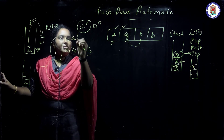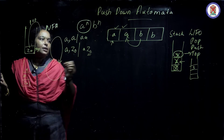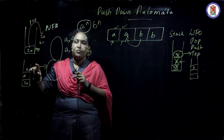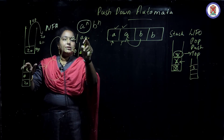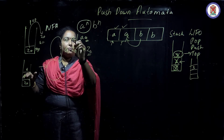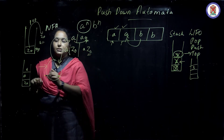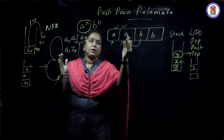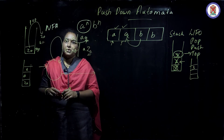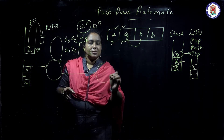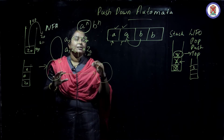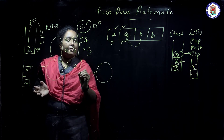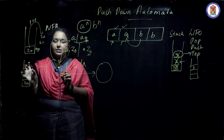Every time 'a' comes and the stack top is 'a', we insert the next 'a'. The previous 'a' is popped for matching and the new 'a' is inserted. This repeats for all incoming 'a's. In the next transition, after inserting all 'a's, we begin deleting for 'b'. When 'b' comes and stack top is 'a', we pop that 'a' — making it null.